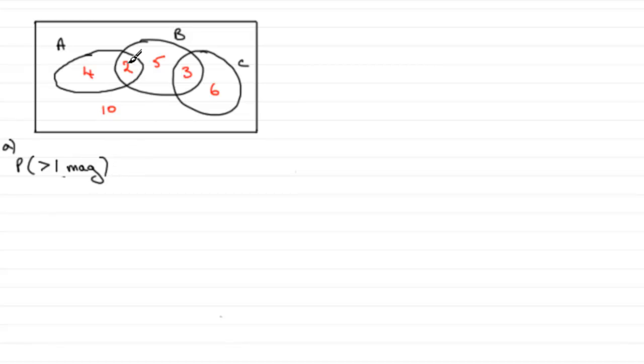The probability of greater than one magazine being read. Well you can see that greater than one magazine, there's going to be two people that read both A and B, and there's going to be three people here that read magazines B and C. So it's just going to be these two and these three people that read more than one magazine. So we just need to say two plus three.